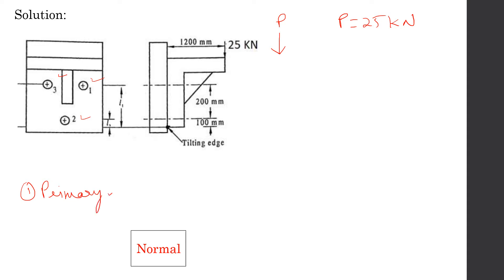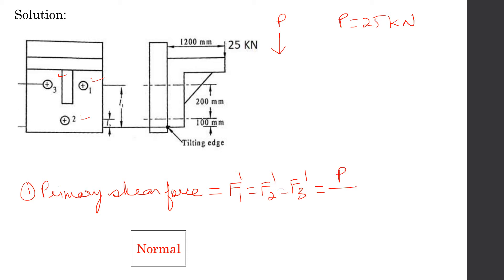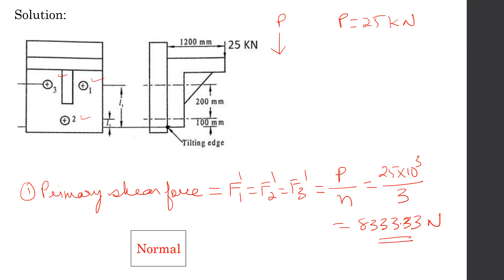The primary shear force is the force resisting the applied load. This is equally shared among all three rivets, so: F1' = F2' = F3' = P / number of rivets = 25,000 / 3 = 8,333.33 N.